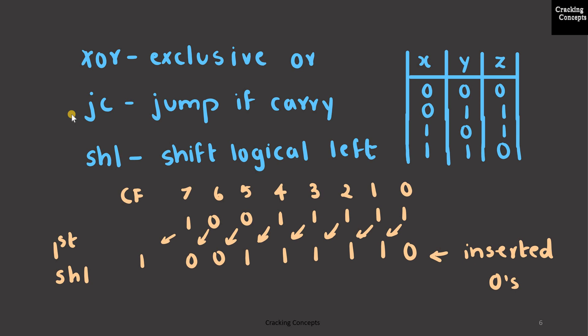We will also be using JC, which is jump when the carry bit is set, and SHL, which is shift logical left that will shift the values of the register one bit to the left through the carry flag. This is an example shown here. So the MSB will be shifted to the carry flag and the LSB will be replaced with zeros, which are inserted from the right-hand side.